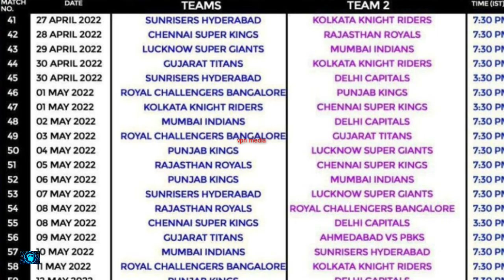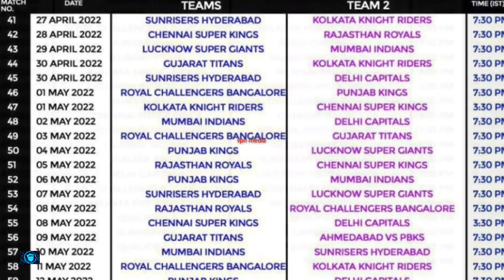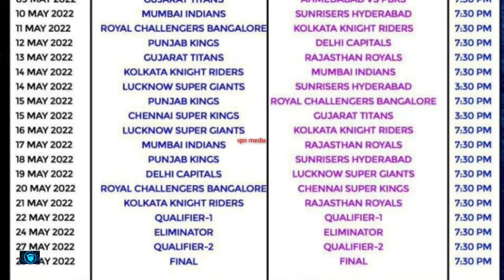May 5th: Rajasthan Royals vs Chennai Super Kings. May 6th: Punjab Kings vs Mumbai Indians. May 7th: Sunrisers Hyderabad vs Lucknow Super Giants. May 8th: Rajasthan Royals vs Royal Challengers Bengaluru. May 8th: Chennai Super Kings vs Delhi Capitals. May 9th: Gujarat Titans vs Punjab Kings. May 11th: Royal Challengers Bengaluru vs Kolkata Knight Riders.